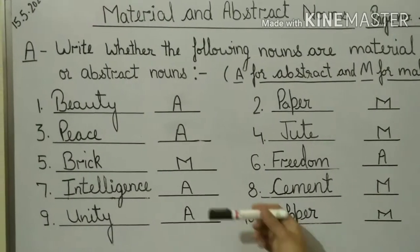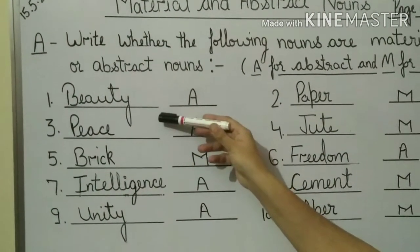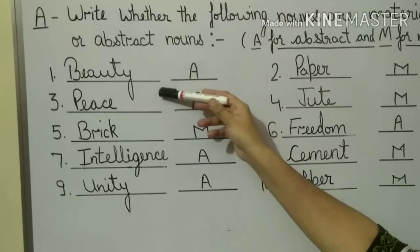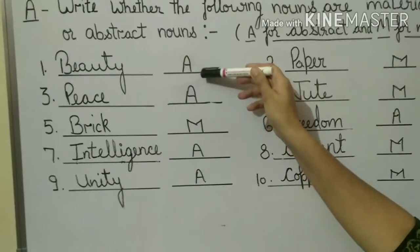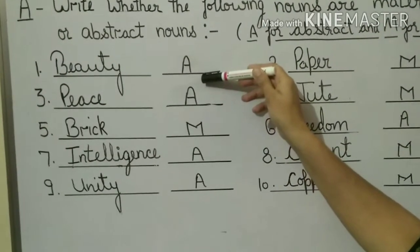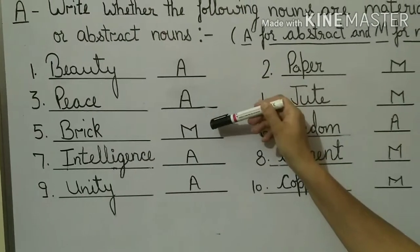So now, first example, beauty. What is beauty? Beauty we can only feel, we can't touch. So it is abstract. Here, I have used A for abstract noun and M for material noun.